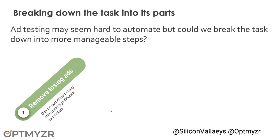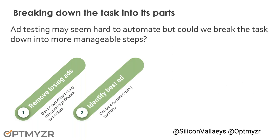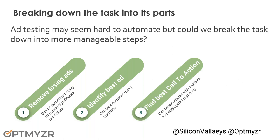But if I break the task of ad optimization into its components, I find there are many parts that can be automated. For example, removing losing ad texts — you can automate that because it's basically just a statistical significance calculation that says which ones are my statistically significant losers inside of an ad group, and pause those. Then identify numerically your best performing ad — whether that's best conversion rate, lowest cost per acquisition, or some combination. It's a numbers game, something you'd typically do in Excel, so you can automate it. Finding your best call to action is also a really fun thing to automate — you can split up ad text components into parts and compare 'sign up today' versus 'sign up now' to see which performs better.